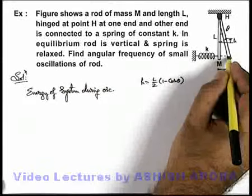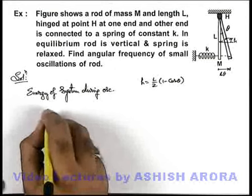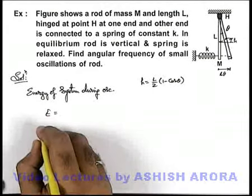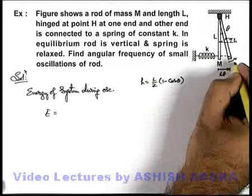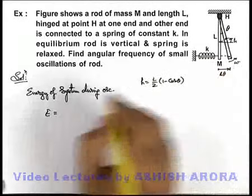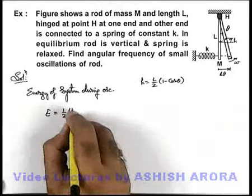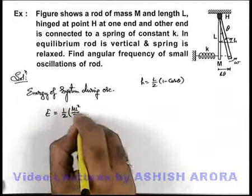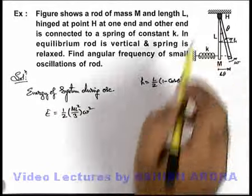If we write at an intermediate position when the rod is at angle θ, this energy can be written as: if it is moving at angular speed ω, we can write its kinetic energy will be ½Iω², which is ML²/3 ω², where ML²/3 is the moment of inertia of the rod which is hinged at one end.